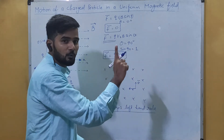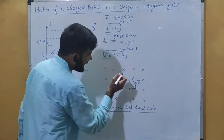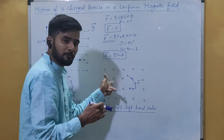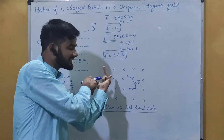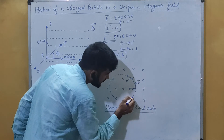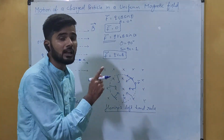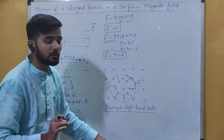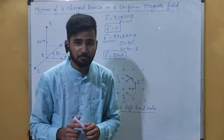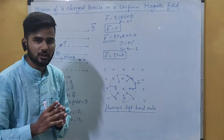The force will turn the particle — it will move the particle in this direction, causing it to turn. At this new position, we again apply Fleming's Left Hand Rule. With the magnetic field into the page and the particle's new direction of motion, the force again points toward the center. At each and every point the force is directed toward the center, so the particle traces a circular path. In an electric field a charged particle executes a parabolic path, but in a magnetic field it traces a circular path when velocity is perpendicular to the field.